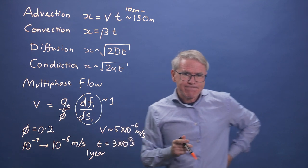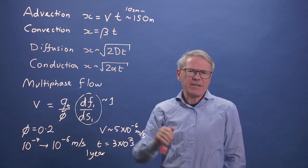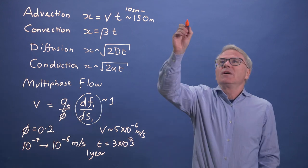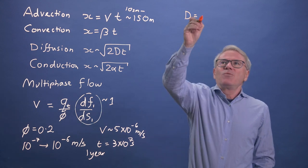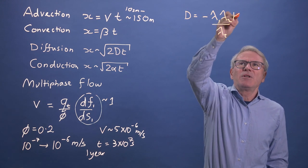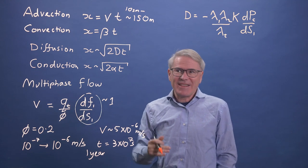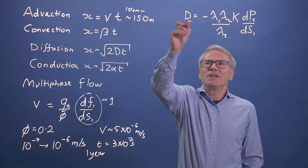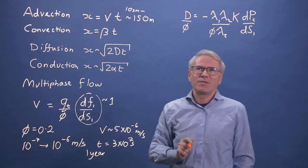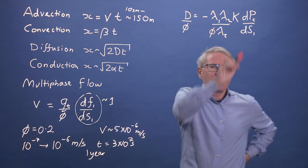What about diffusive transport? What about things controlled by capillary pressure? Let's think about D. It's going to be a little bit more complicated, but it gives us an order of magnitude. D — if you recall — was minus (λ₁λ₂/λ_t) times the permeability times the gradient in capillary pressure. And we actually need to look at D over phi, because there's always a porosity that comes into our equation. This is the object controlling the smearing out.